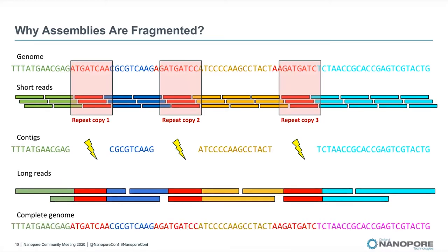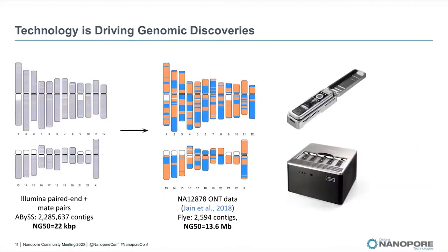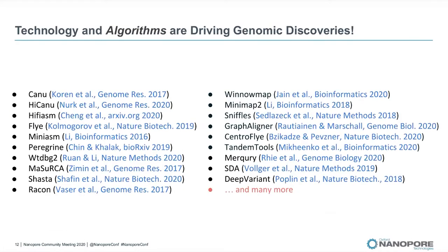This is why everyone was so excited about new long-read and synthetic long-read technologies. Assemblies of different organisms have improved dramatically, so the technology was really driving new genomic discoveries. But was it only the technology? Of course not. There were a tremendous number of algorithms developed in the past few years to support the analysis and assembly of long-sequencing data. Without those improvements, it wouldn't have been possible to achieve what we recently have.